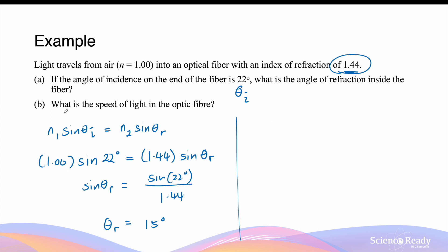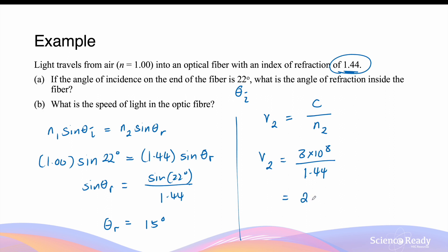Now for part b: what is the speed of light in the optic fibre? The velocity of the light wave in the new medium, v2, is equal to the speed of light in air divided by the refractive index of the new medium. So v2 = (3 × 10⁸) / 1.44, which gives a value of 2.083 × 10⁸ metres per second. The velocity being slower than in the original medium is also expected, due to the optic fibre having a higher refractive index than air.